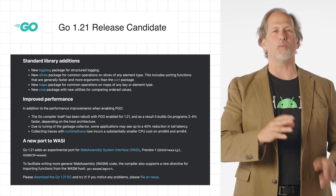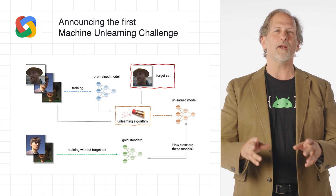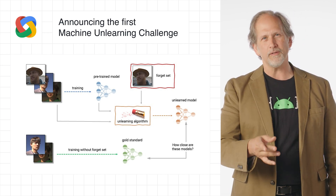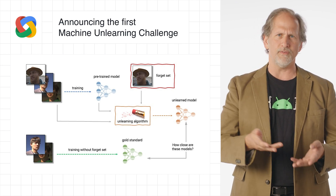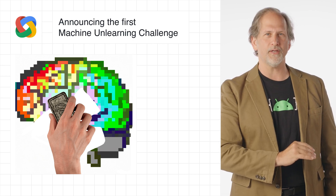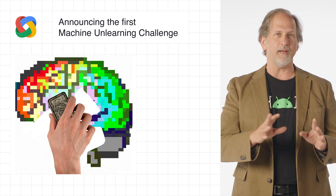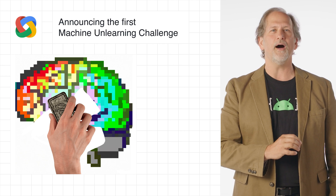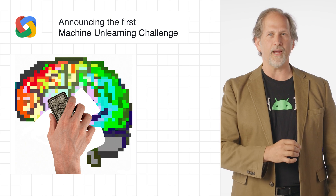We teamed up with a broad group of academic and industrial researchers to organize the first machine unlearning challenge. The competition involves having a trained model forget a certain subset of the training images to protect the privacy or rights of the individuals concerned. The competition will be hosted on Kaggle, and submissions will be automatically scored in terms of both forgetting quality and model utility. We hope this competition will help advance the state-of-the-art in machine unlearning and encourage the development of efficient, effective, and ethical unlearning algorithms.